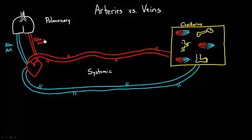Now let's get into exactly how to think about arteries and veins in general. Arteries take blood away from the heart — that's the easiest and clearest way to define an artery. Veins bring blood back. This is our first point of difference: the direction of flow. Even in the pulmonary system, arteries take blood away and the vein brings blood back.